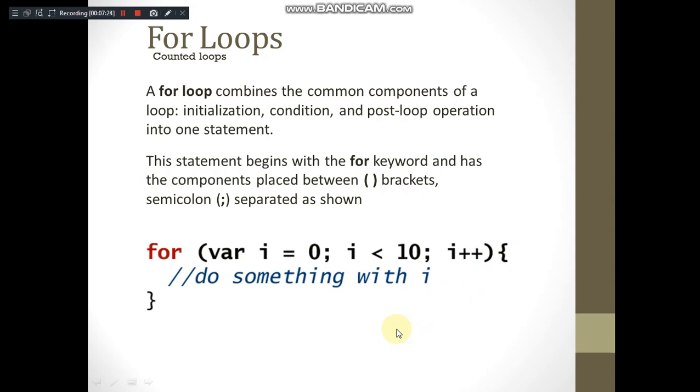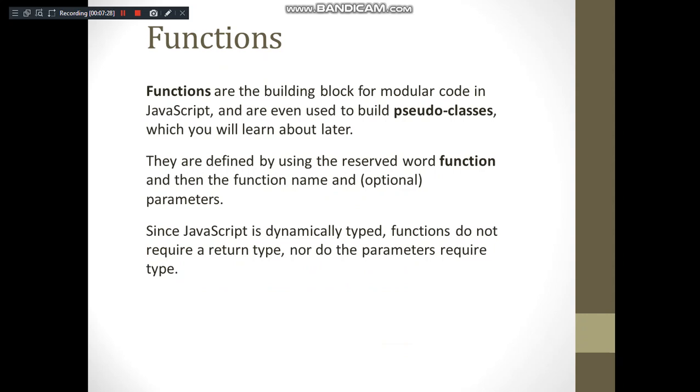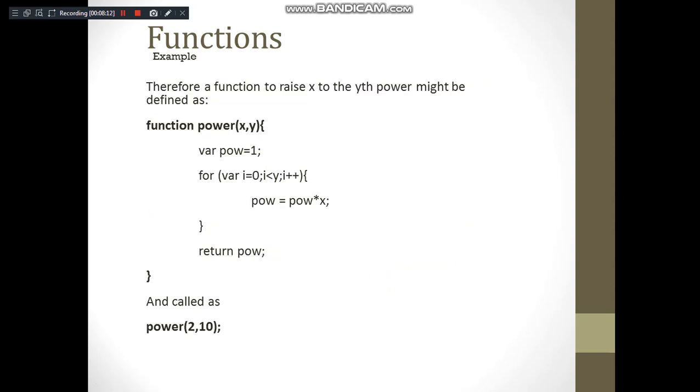Now we will look into how to define user-defined functions in JavaScript. Here they are defined by using the reserved word function, similar to our C functions. But writing a function name is mandatory; writing the parameters is optional. The reason is JavaScript is a dynamically typed language. Functions do not require a return type also, and they do not require parameters' type to be specified as well. We will see to better understand the syntax with an example here.